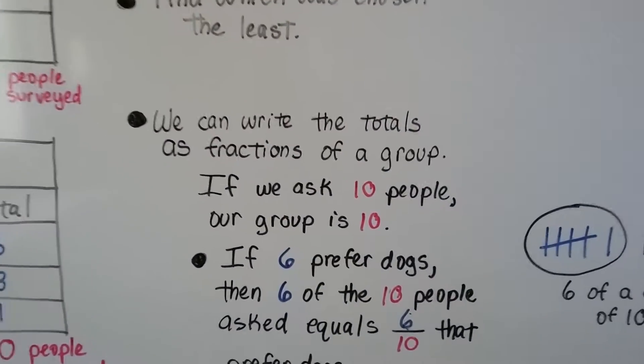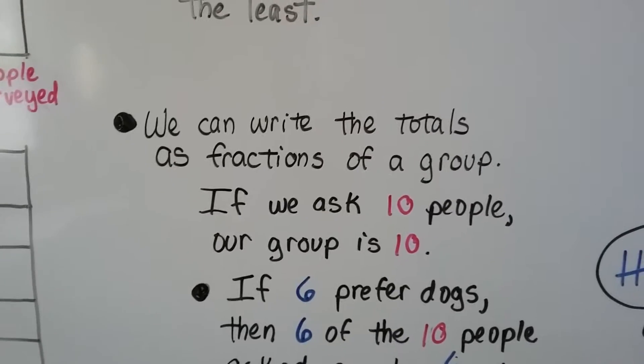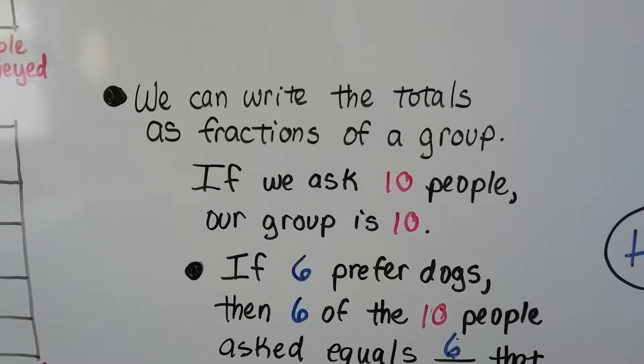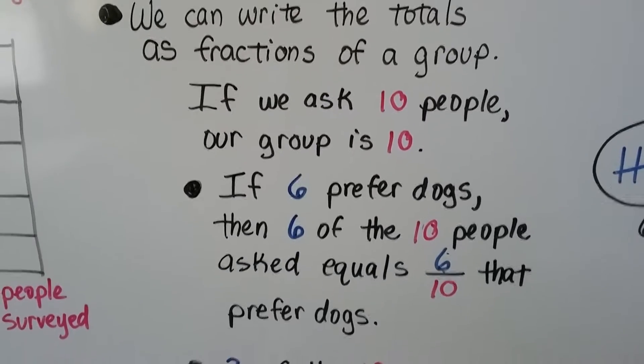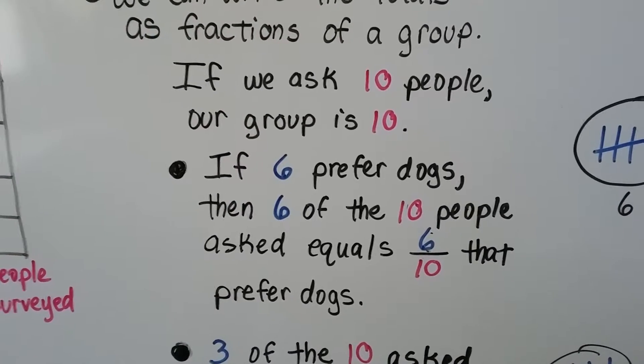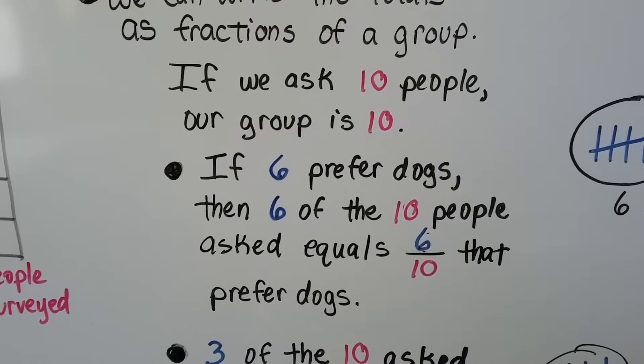We can write the totals as fractions of a group. We just did that in the last video, fractions of a group. If we asked ten people, our group is ten. If six preferred dogs, then six of the ten people asked equals six tenths that prefer dogs.